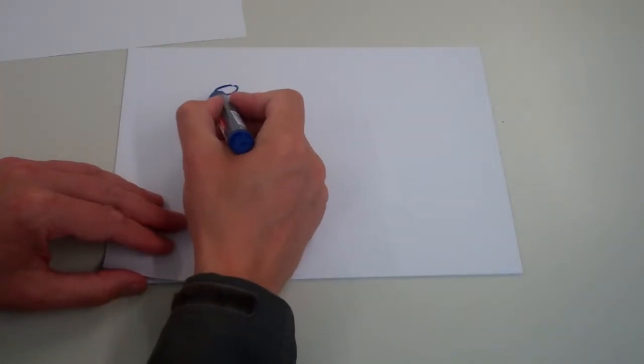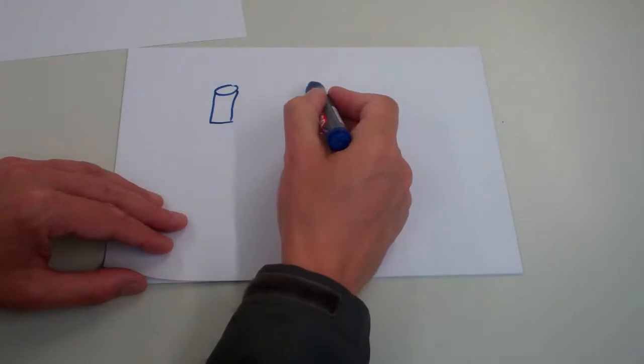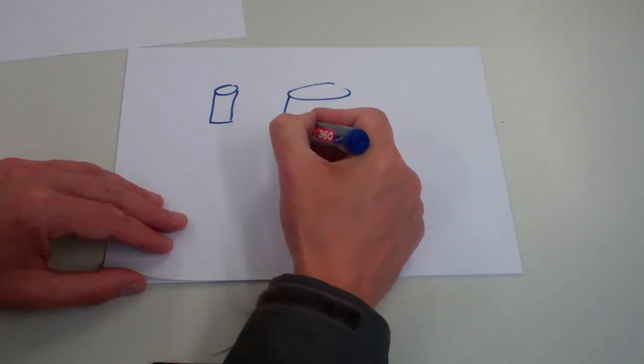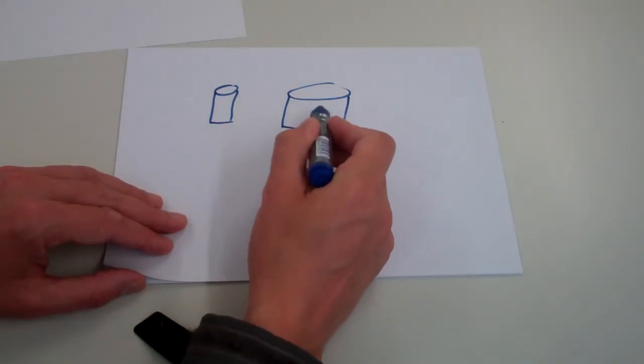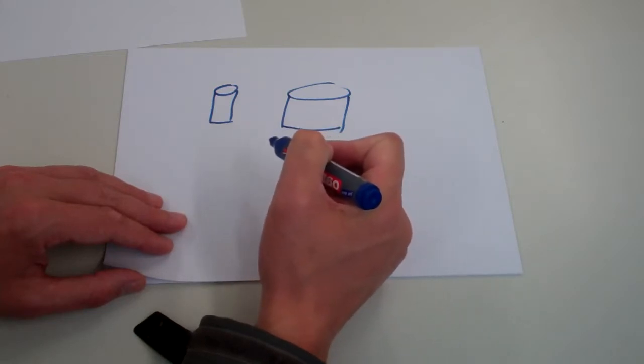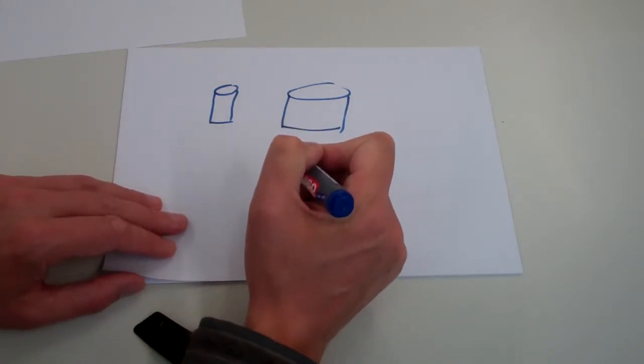Obviously what we're talking about here is the behavior of materials under forces. If we imagine these two cylinders are made out of the same material, clearly this material would need a greater force to cause it to fail in stretching than this one, and that's because this has got a larger cross-section area.